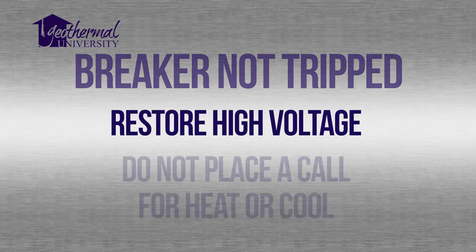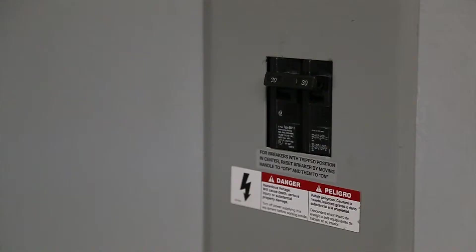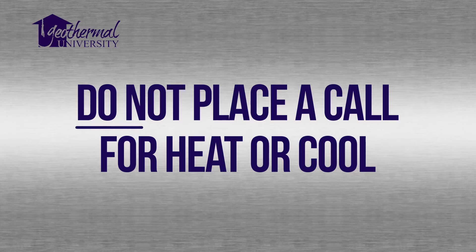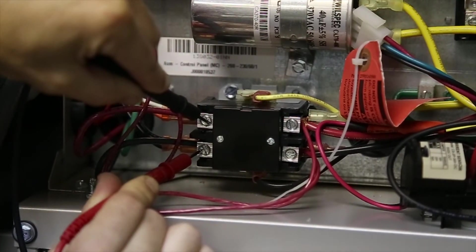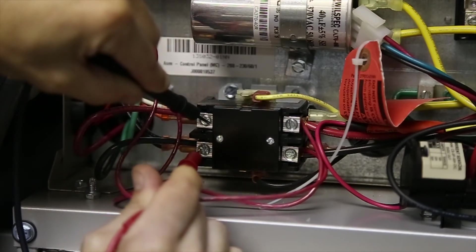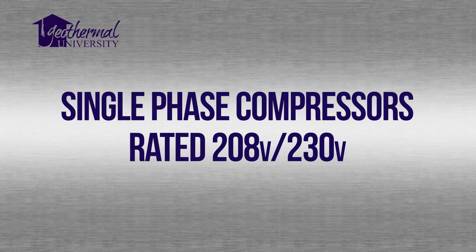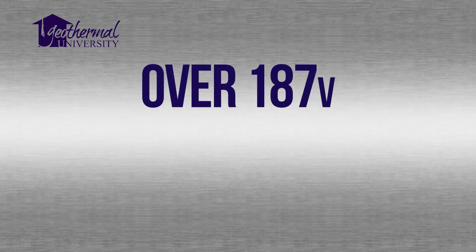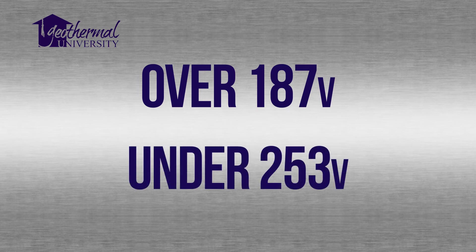For these steps, restore high voltage but do not place a call for heat or cool. If the breaker is not tripped, follow these steps. There should be no call for heat or cool. Check voltage on the line side of the compressor contactor, which is L1 and L2. Single-phase compressors are rated 208–230 volts. Voltage must be within those specifications — that is, over 187 volts and less than 253 volts.